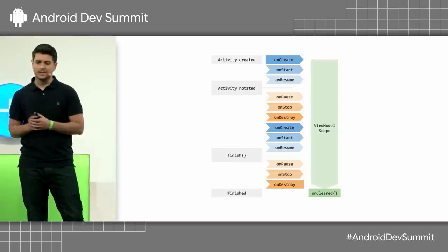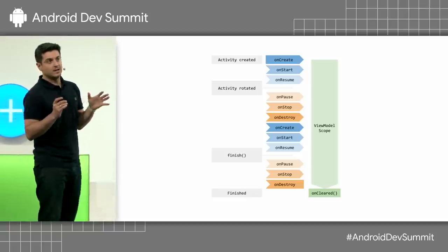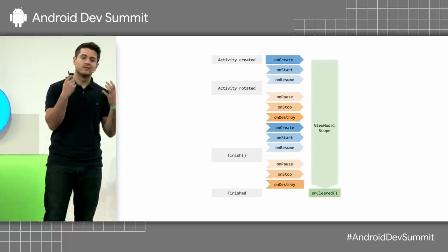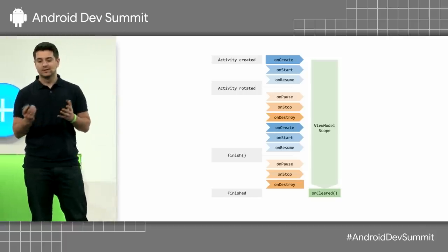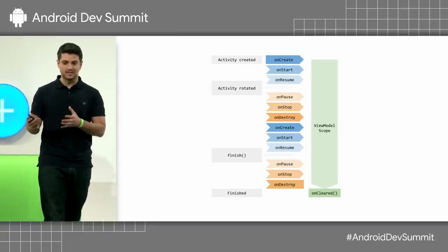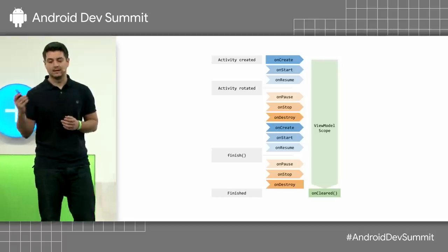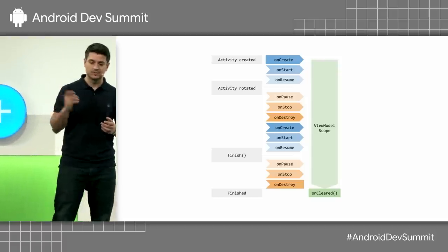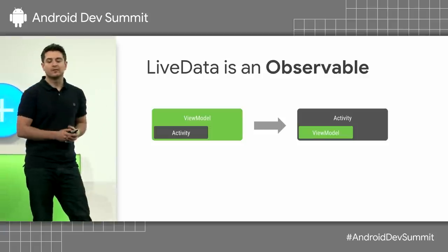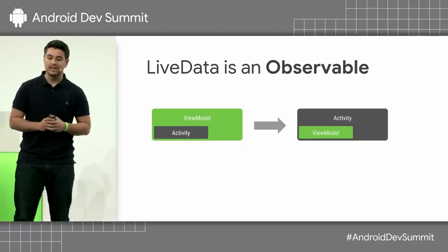You might be familiar with this diagram — it's the ViewModel scope diagram. A simple thing, like a device rotation, can actually recreate the activity. So you probably know that having a reference to an activity in the ViewModel would be a bad idea because it leads to memory leaks, even crashes with null pointer exceptions. So instead, we're going to try to have a reference to the ViewModel in the activity.